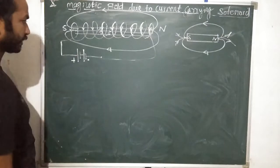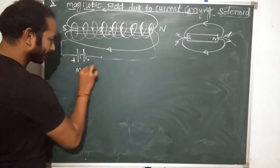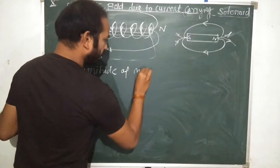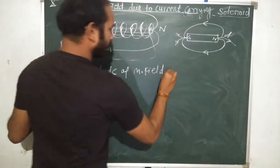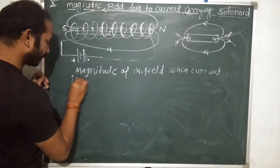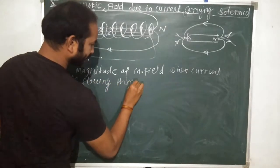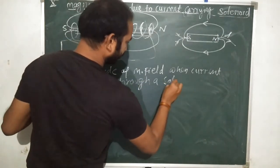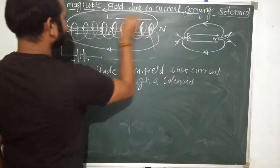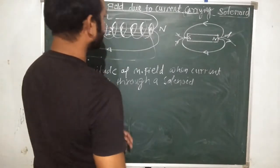So how do we calculate the magnetic field magnitude when current is flowing through a solenoid? We consider the length of the solenoid as L and the number of turns as n.